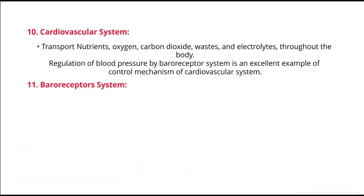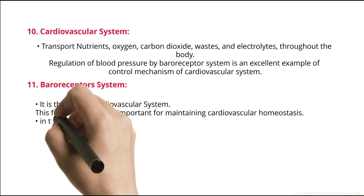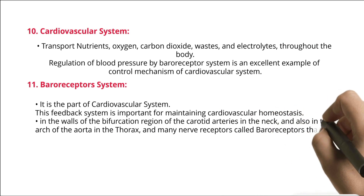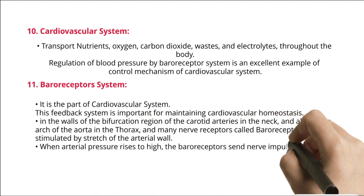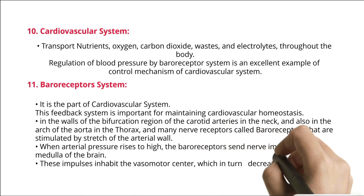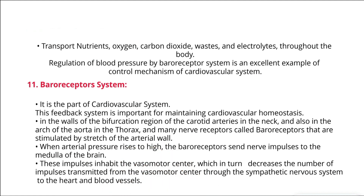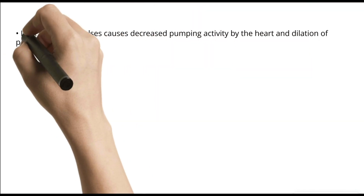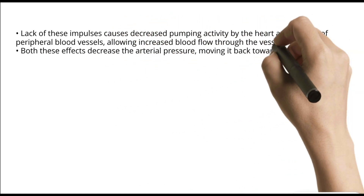11. Baroreceptor system — part of the cardiovascular system. This feedback system is important for maintaining cardiovascular homeostasis. In the walls of the bifurcation region of the carotid arteries in the neck, and also in the arch of the aorta in the thorax, are many nerve receptors called baroreceptors that are stimulated by stretch of the arterial wall. When arterial pressure rises too high, the baroreceptors send nerve impulses to the medulla of the brain. These impulses inhibit the vasomotor center, which in turn decreases the number of impulses transmitted through the sympathetic nervous system to the heart and blood vessels. Lack of these impulses causes decreased pumping activity by the heart and dilation of peripheral blood vessels, allowing increased blood flow through the vessels. Both these effects decrease arterial pressure, moving it back toward normal.